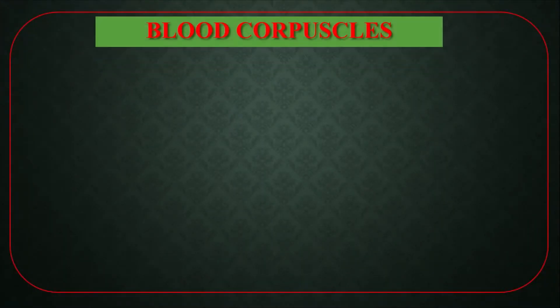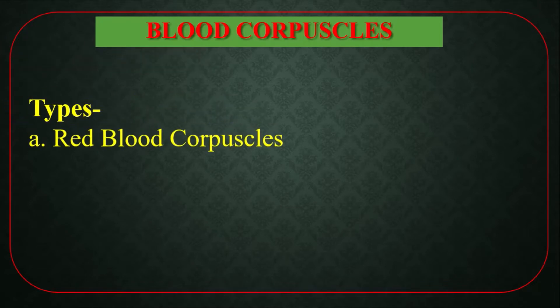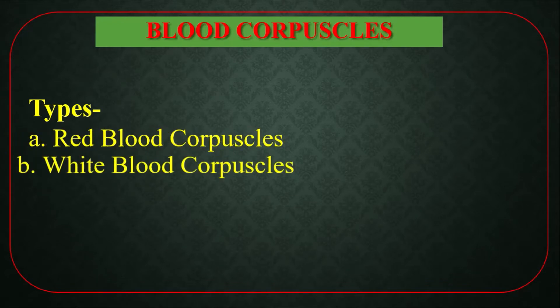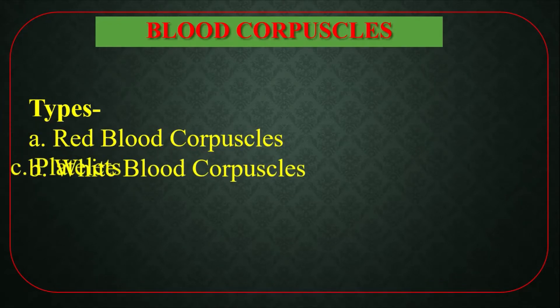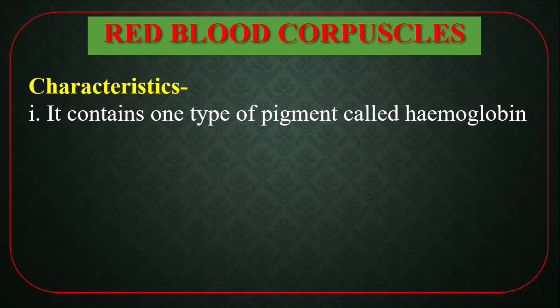Blood cells are of three types: number one, red blood cells or RBC; number two, white blood cells or WBC; and number three, platelets or thrombocytes. Characteristics of RBC: it contains a type of pigment called hemoglobin.